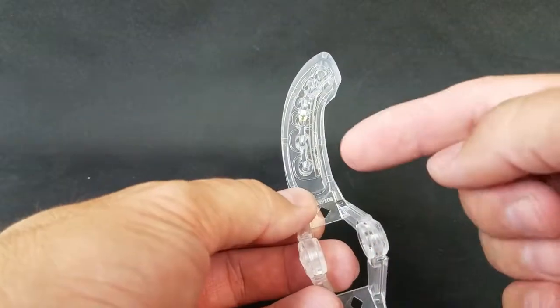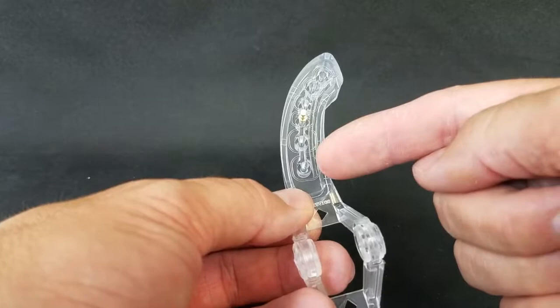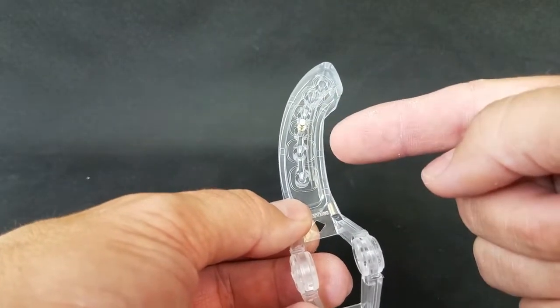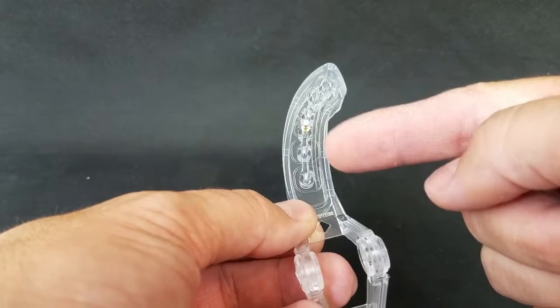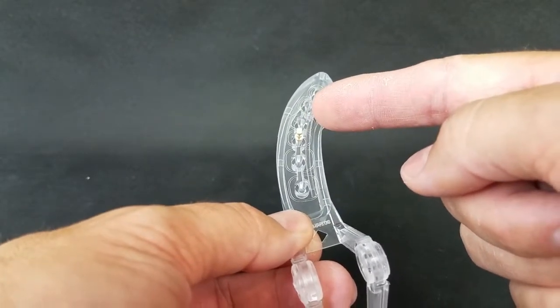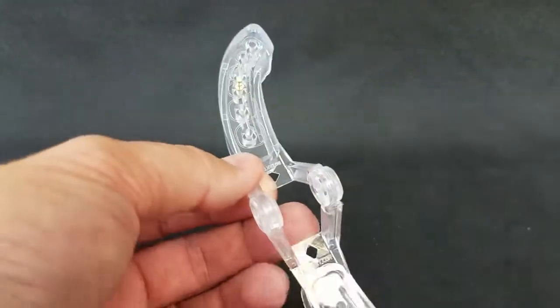Another key feature is the pin placement guide. Each of these circles around the pin hole represents a tooth. So if you're doing a first molar, you know it's going to be in that one. Second molar, first bicuspid, second bicuspid, cuspid. It makes it really easy to line up.